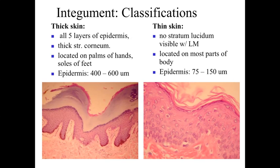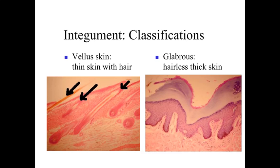The other way of classifying skin is by the presence or absence of hair. Vellus skin is skin which has hair — essentially thin skin with many hair follicles located within it. In contrast, glabrous skin is hairless skin, and that corresponds to the thick skin found on the palms of the hands and the soles of the feet.